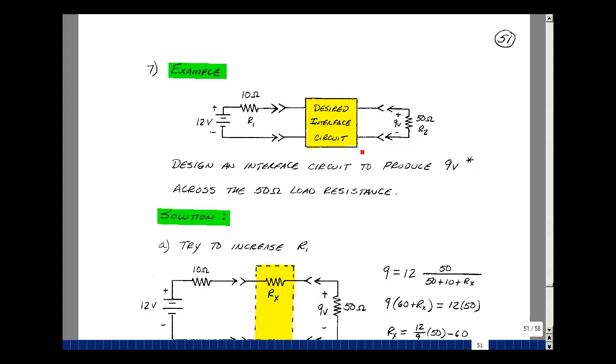Suppose that we want to design an interface circuit to connect up to 50 ohms to produce 9 volts when we hook up a 12 volt source with a 10 ohm series resistance.